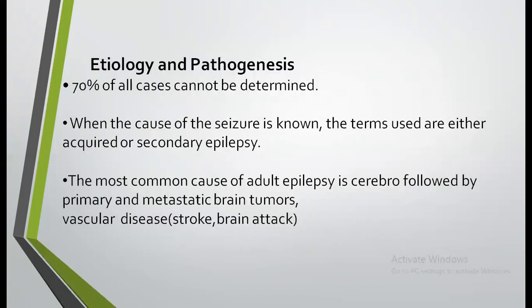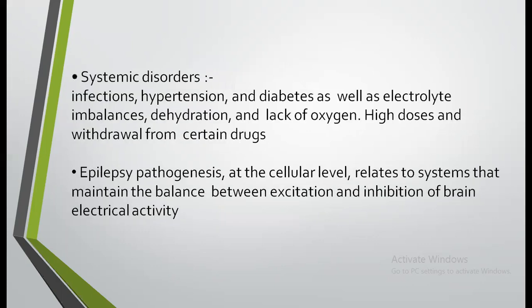Etiology and pathogenesis. 70% of all cases cannot be determined. When a cause of seizure is known, the terms used are either acquired or secondary seizures. The most common cause of adult epilepsy is cerebral, followed by primary and metastatic brain tumors, vascular diseases such as stroke and brain attack. Systemic disorders include infection, hypertension, diabetes, as well as electrolyte imbalance, dehydration and lack of oxygen.